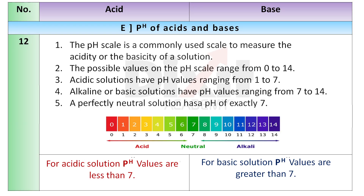The pH scale is a commonly used scale to measure the acidity or basicity of a solution. The possible values on the pH scale range from 0 to 14. Acidic solutions have pH values ranging from 1 to 7. Alkaline or basic solutions have pH values ranging from 7 to 14. A perfectly neutral solution has a pH of exactly 7.